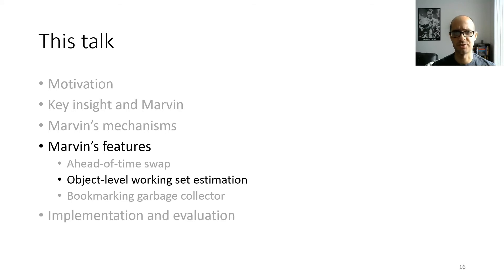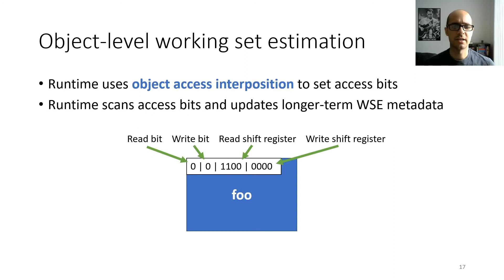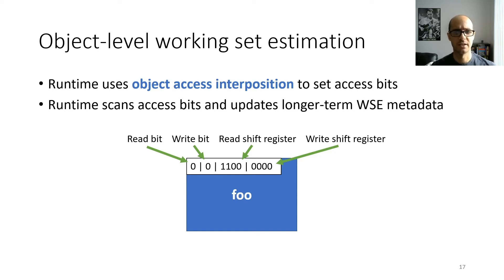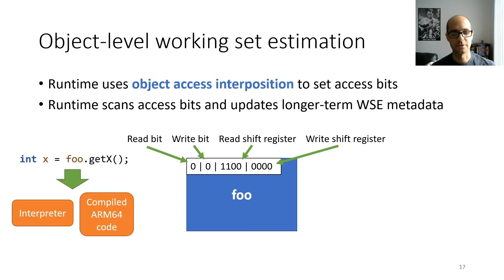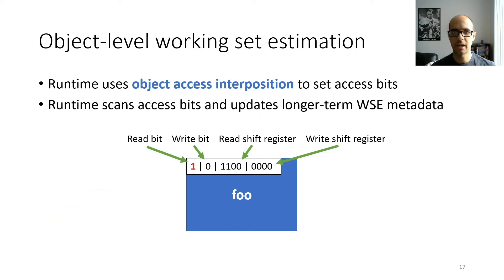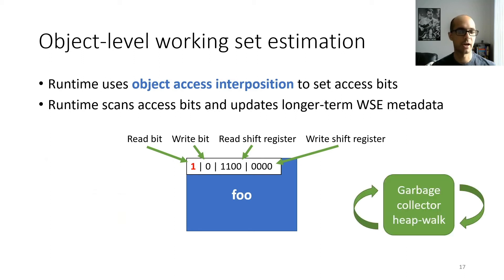For object-level working set estimation, we use a round-based approach where every object header has both short-term metadata indicating whether the object has been accessed this round, and longer-term shift registers that track access patterns across rounds. The runtime uses object access interposition to set short-term access bits when app code accesses an object. For tracking access across rounds, we periodically invoke the garbage collector and piggyback on its heap walks — when the GC visits an object, we look at the short-term access bits and update the longer-term shift registers.